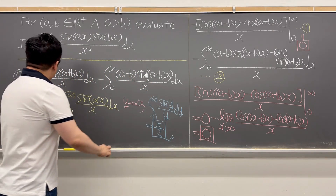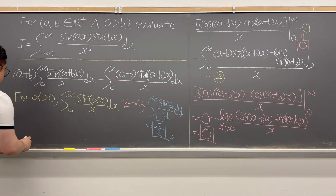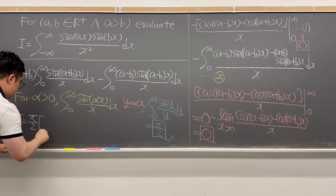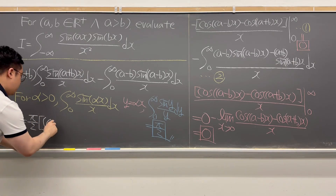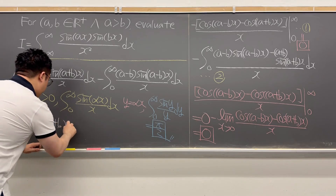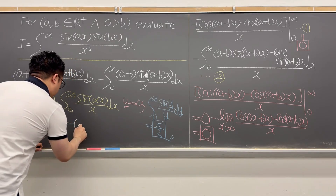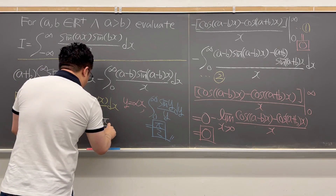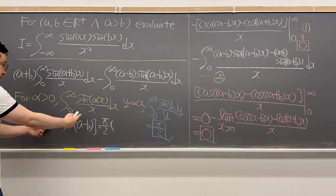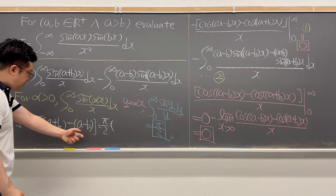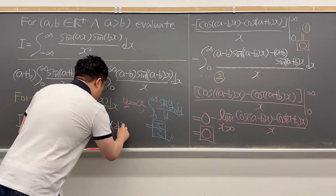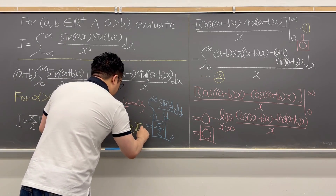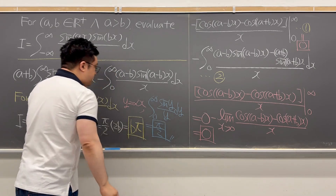So the answer for this question is: I equals π over 2 times (A plus B) minus π over 2 times (A minus B). The A terms cancel out, leaving π over 2 times 2B, so the final answer is simply Bπ.